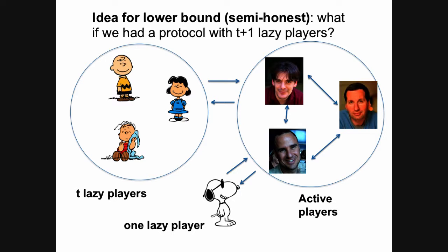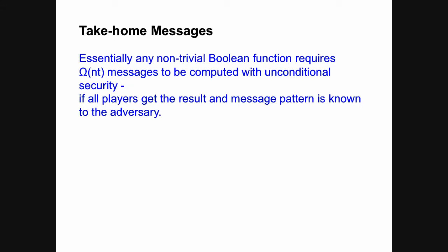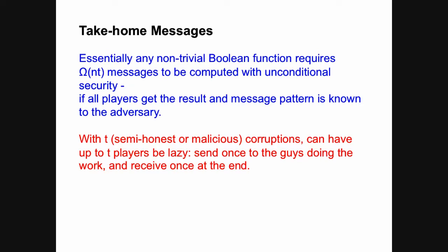The take-home messages: First, essentially any non-trivial Boolean function requires Ω(N·T) messages for unconditional security when all players get the result and the message pattern is known to the adversary — though if the message pattern is secret, or if computational assumptions are allowed, better bounds are possible. Second, with T semi-honest or malicious corruptions at the maximal threshold, up to T players can be lazy: they send once to the others, lean back, and wait for the result to arrive.